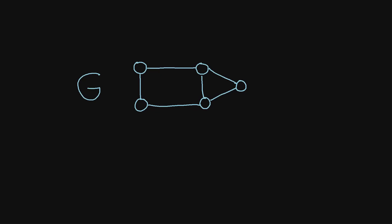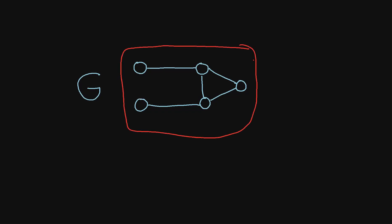In this video, I will explain the idea of subgraphs in graph theory. So imagine that we have this graph right here, let's call it graph G. Now suppose that we remove this edge from graph G. This resulting graph right here is known as a subgraph of the original graph G. The reason we call it a subgraph is because all of the vertices and all of the edges in this resulting graph are a subset of the vertices and edges of the original graph G.